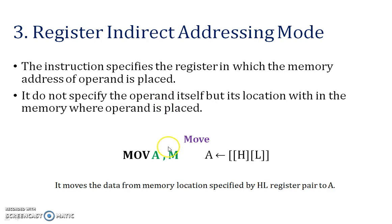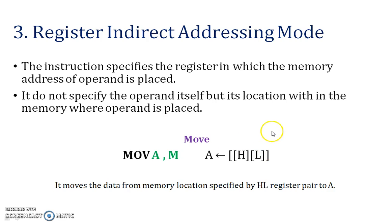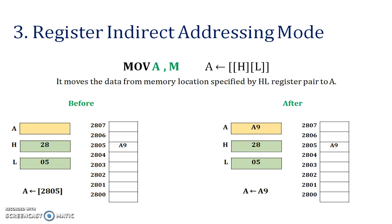Next — register indirect addressing mode. Whenever you store a particular register in another register and the data comes from a different register addressing mode, it is called register indirect addressing mode. Now we will see one example for a better explanation.